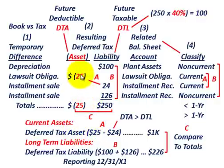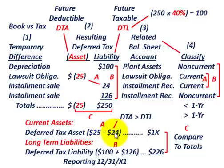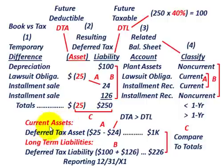Because our current deferred tax asset of $25,000 is greater than our current deferred tax liability of $24,000, the net result is classified as a deferred tax asset — specifically a current asset on the balance sheet. Subtracting: $25,000 DTA minus $24,000 DTL gives us a net current deferred tax asset of $1,000. If the opposite were true and the liability exceeded the asset, it would be reported as a current deferred tax liability.